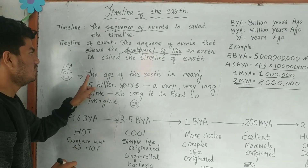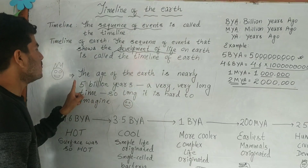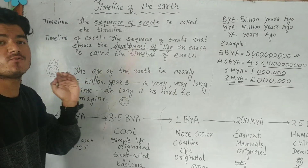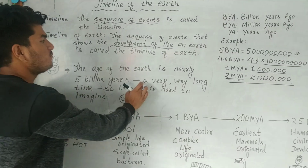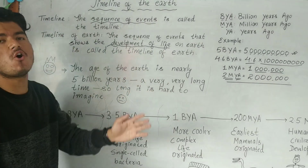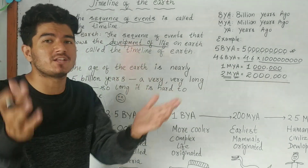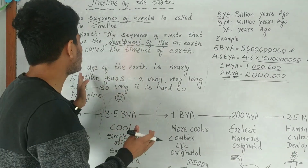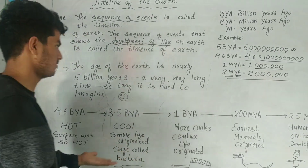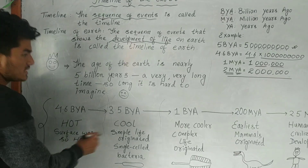The age of the Earth is nearly five billion years. Imagine — five billion years! That is a very, very long time, so long that it is extremely difficult for us to imagine. Now let us look at the timeline of the Earth.